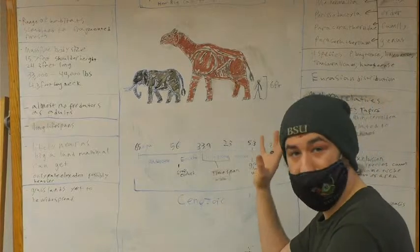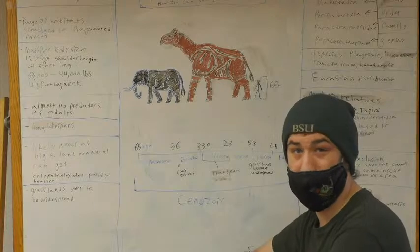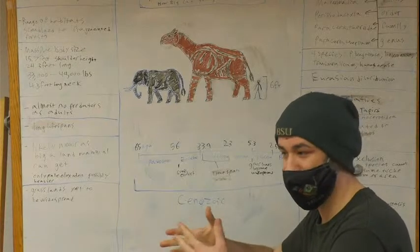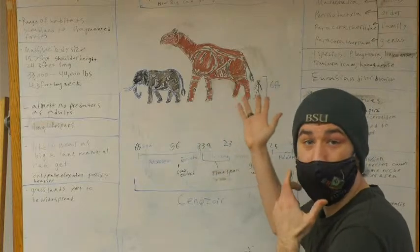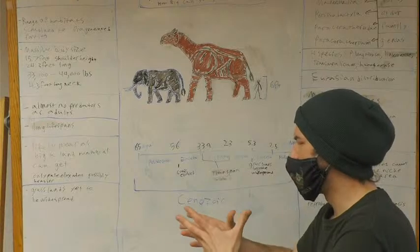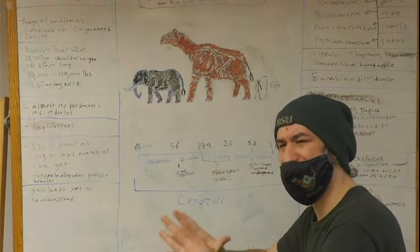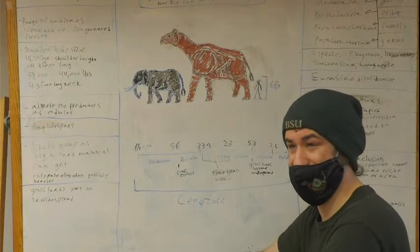So the other thing is they also, from what we can tell from the skeletons, had long lifespans. 80 to 90 was probably within these animals' ability to live. When you're that big, it takes a while to grow to that size. And also they are actually pretty likely as big or close to as big as a mammal on land can get.